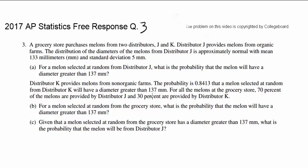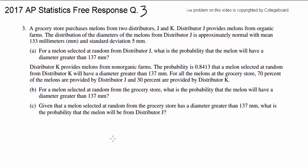Let us look at free response question number 3 from the 2017 AP Statistics Test. A grocery store purchases melons from two distributors, J and K, and for distributor J, they provide melons from the organic farm.